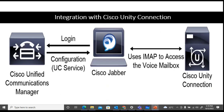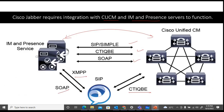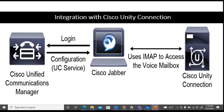For integration with Unity Connection: to get voicemail services using Jabber, you have to integrate it with Unity Connection. CUCM communicates with Jabber using the protocols discussed, such as CTI QBE. For login, a UC service must be configured on CUCM for Jabber to associate with it. Unity Connection can be integrated using IMAP as a protocol to access the voicemail inbox.